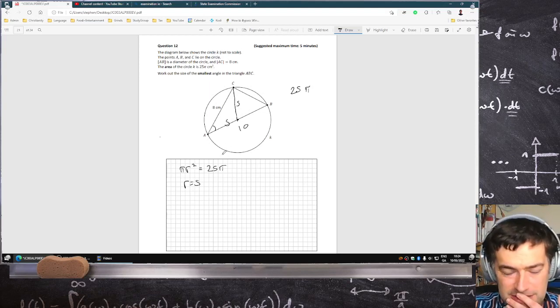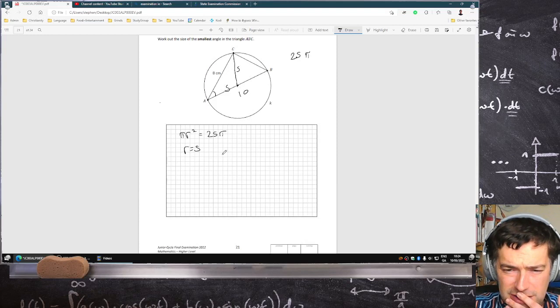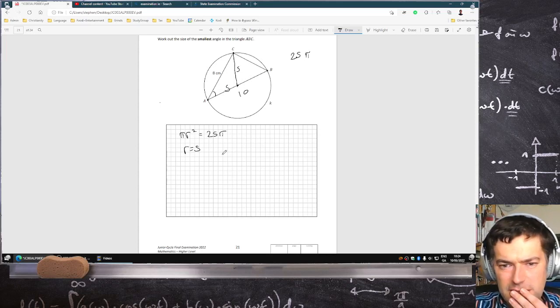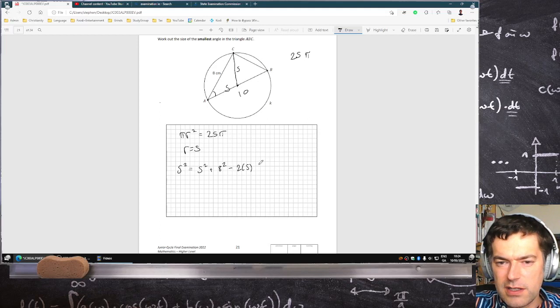Now there's a real easy way to get this, but I'm not sure that students use this formula anymore, called the cosine rule, that says 5² equals 5² plus 8² minus twice 5 times 8 cos A.